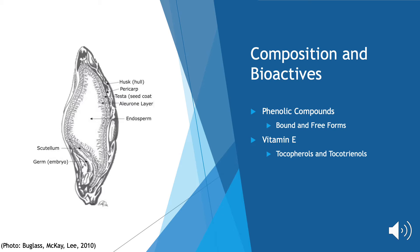Some of the main bioactive compounds found in barley are phenolic compounds and vitamin E. Phenolic compounds are typically found in the outer layers of the kernel. For example, flavonoids and free forms of phenolic acid are found in the pericarp. However, bound forms of phenolic compounds are ester-linked to the lignin, cellulose, and other polysaccharides in the cell walls.